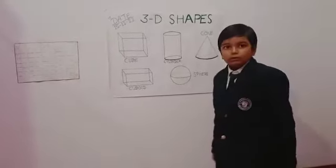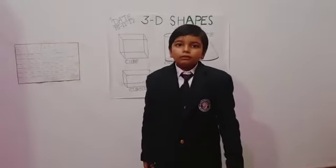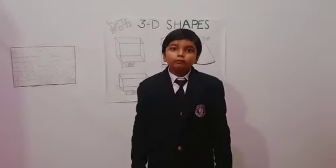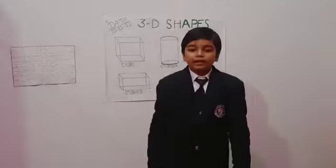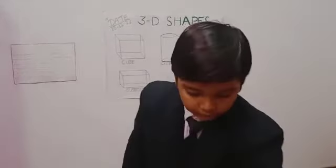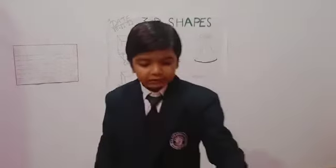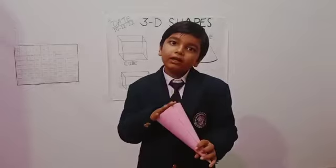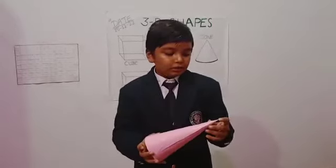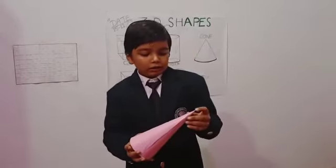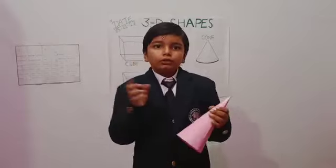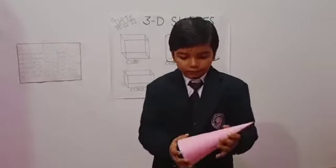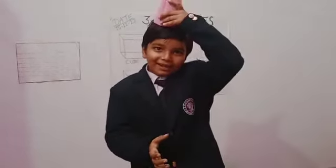Now we will learn 3D shapes with some objects. Okay sir. This is a cone. It has one face. It has one corner. It has no side. And it looks like a party cap.